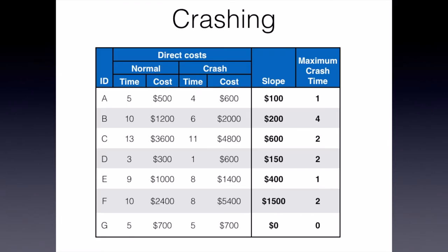So what we can do is look at all the critical path activities — in fact, all the activities in our network entirely — find out what that slope value is, what the cost is per time increment, and find out what the maximum crash time is. Going from task A, it can be reduced a maximum of one day for a cost of $100, whereas task B could be reduced by up to four days for $200 per day. Task G cannot be reduced no matter how much money we pour into it — it's going to be five days and five days only.